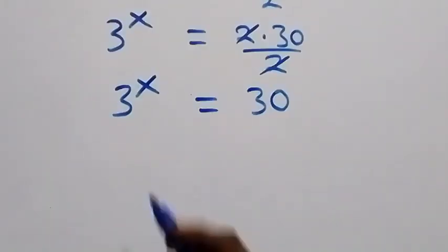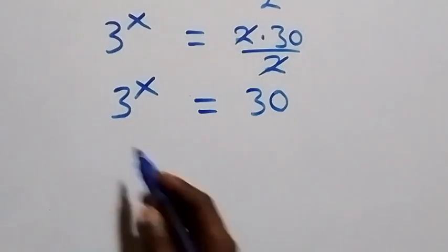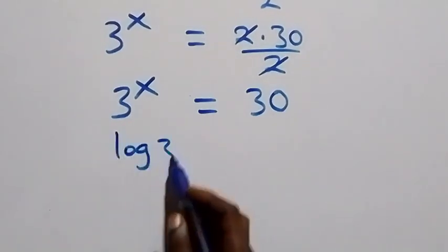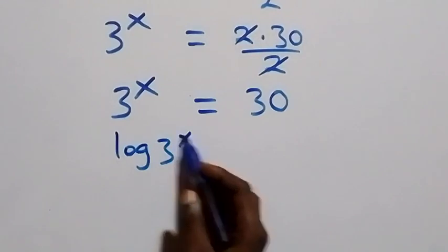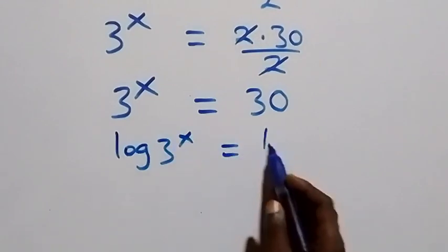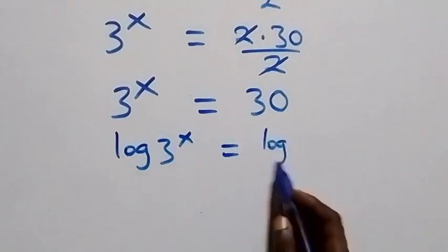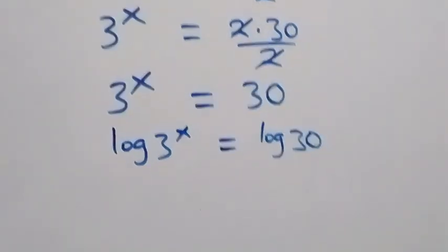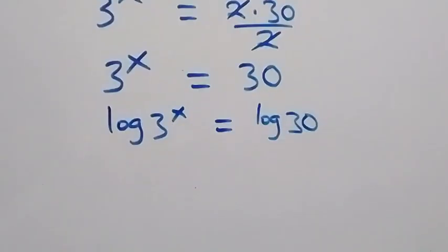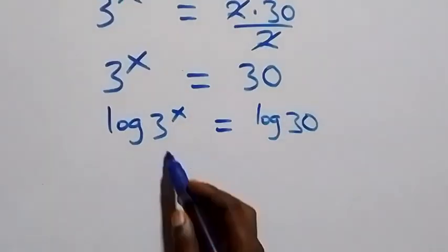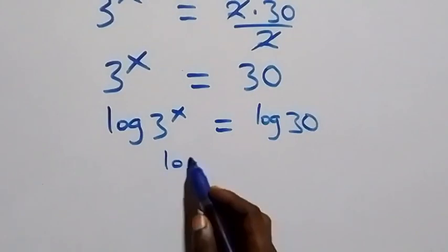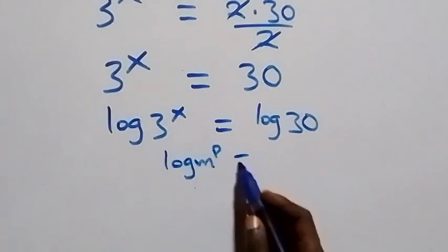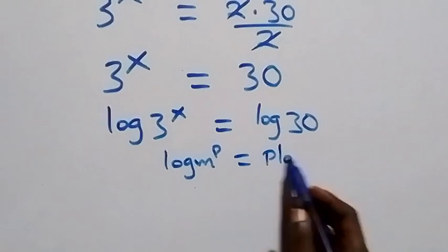From here we take the log on both sides, so we have log of 3 raised to power x equals log of thirty. Then applying the power rule of logarithms: when we have log of m raised to power p, this is simply p times log m.